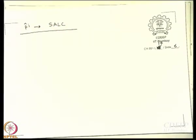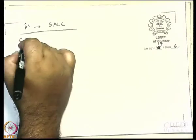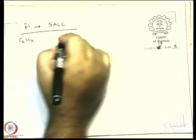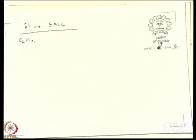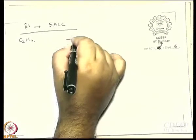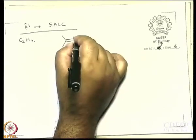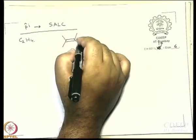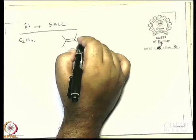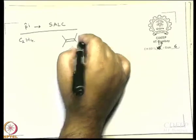How can one use projection operators to get SALCs? Let us take a simple example: C2H4. What is the structure of C2H4? I can draw it like this — ethylene. What is the point group? D2H.